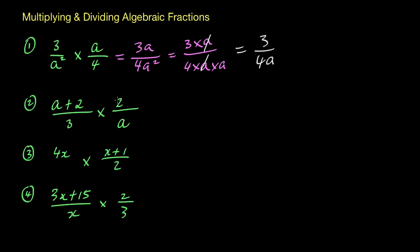You could have actually sped up the entire process by recognizing that this a squared on the bottom was going to cancel with the a on top. There's one a on top and two a's on the bottom — a times a — so just get rid of one by cancelling out that squared value, and you're left with 3 on top and 4 times a on the bottom. That's a quicker way of doing it, and as you practice you'll be able to see those shortcuts.